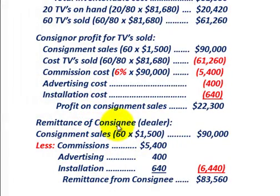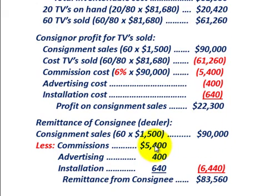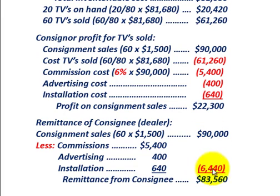Now let's look at the remittance from the consignee or the dealer — what they actually paid to the consignor or the wholesaler. Consignment sales: 60 TVs times $1,500 each equals $90,000. The consignee would retain their commission of $5,400, advertising of $400, and installation of $640. So out of the total $90,000 sold, they hold back $6,440.